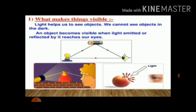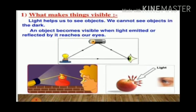What makes things visible? Light helps us to see objects. We cannot see objects in the dark. An object becomes visible when light emitted or reflected by it reaches our eyes.